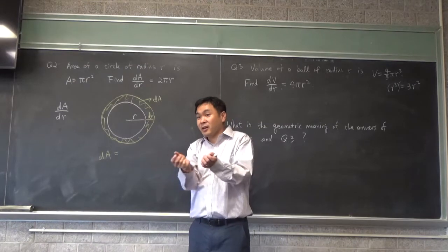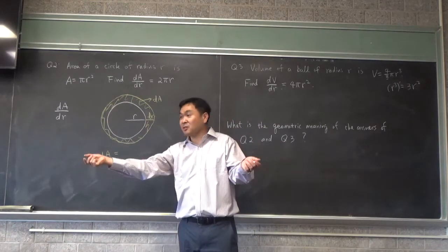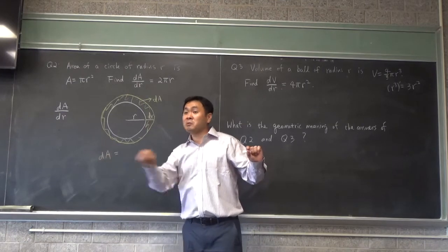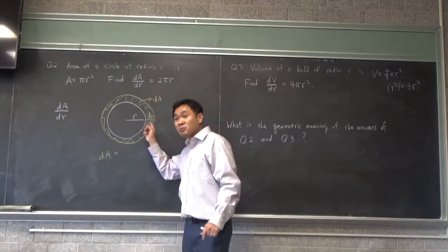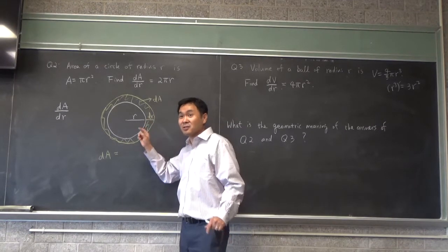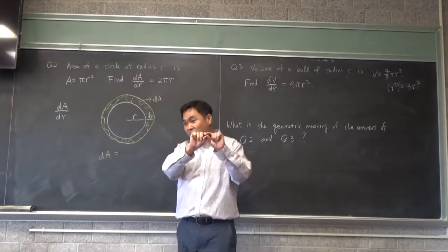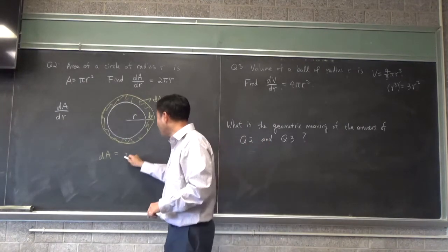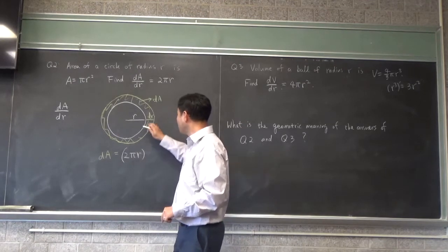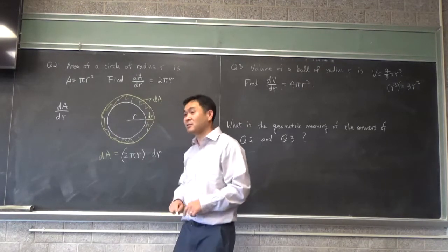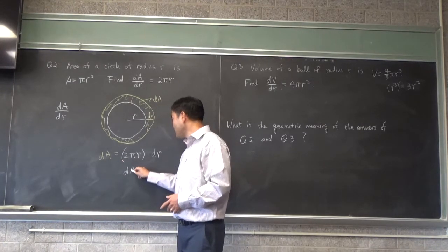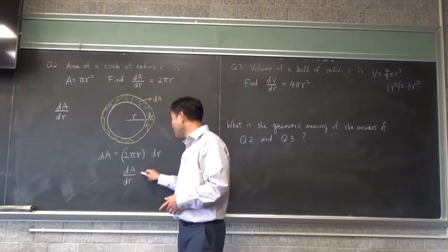And if you unwrap it like this, then the height will be what? dr. dr will be the height. What will be the base length? It will be the circumference of the circle. Do you agree? Right? If you unwrap it, the base length will be the circumference of the circle, which is 2πr times dr. Now you divide both sides by dr. What do you get? You get dA over dr, that is 2πr.